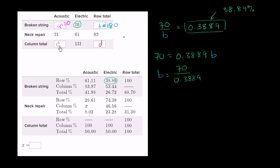Now we can figure out C. C is going to be 110 plus 21, which is 131. And then finally, D is just 180 plus 82, which equals 262.